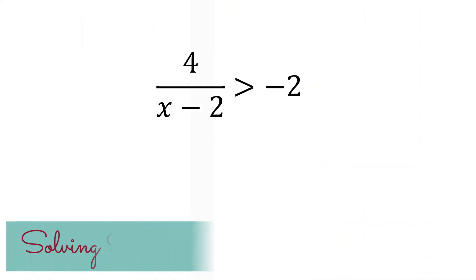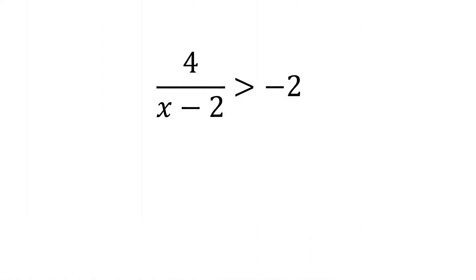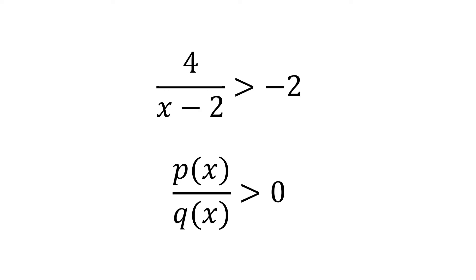We have 4 all over x minus 2 is greater than negative 2. The first thing to do in solving rational inequality is to rewrite the inequality to the form P(x) over Q(x) is greater than 0. Notice that there are two conditions that should be satisfied: first, there should be one rational expression only on the left side, and second, only 0 on the right side. Take note, however, that the inequality symbol depends on the given rational inequality.